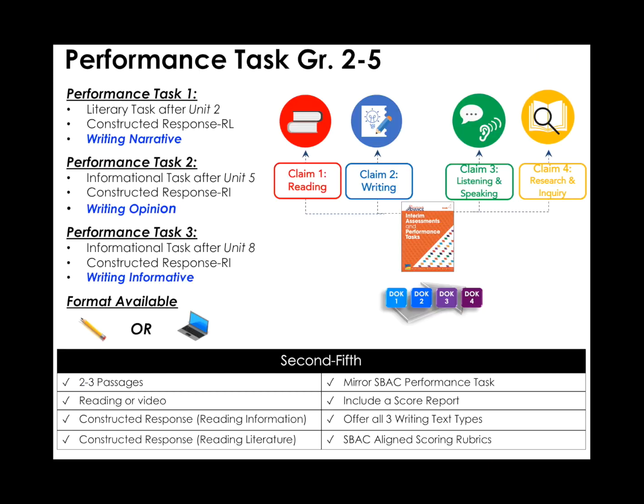Performance tasks begin in grade 2. These tasks are based on the Common Core State Standards and the kind of tasks required of students who take the Smarter Balanced assessment. Performance tasks can be used as summative assessments of what students have learned thus far or as formative assessments after direct instruction. Performance task 1 should be administered after unit 2 and includes 2 to 3 literacy passages, constructive response questions, and a narrative writing prompt.